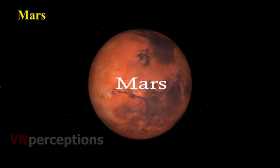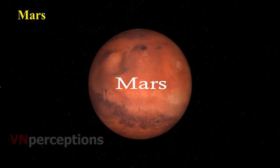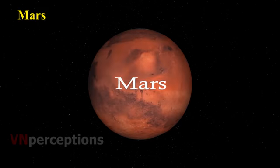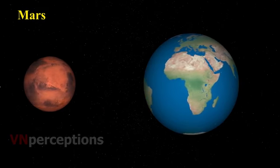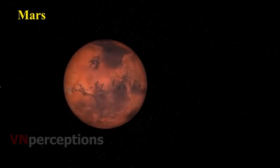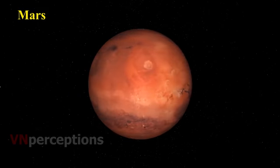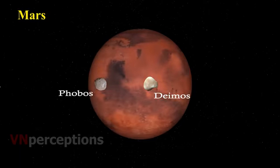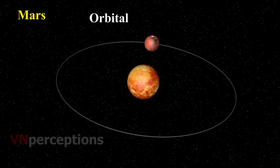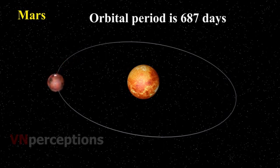Then comes Mars, the first planet actually outside the orbit of the Earth. Mars is a cold desert world. It is half the size of Earth. Mars is sometimes called the red planet. It is red because of rusty iron in the ground. Mars has two small natural satellites, that is Phobos and Deimos. Its orbital period is 687 days, that is to complete one revolution it takes 687 days.